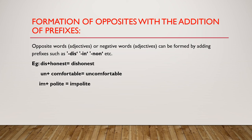Formation of opposites with the addition of prefixes: opposite words or negative words can be formed by adding prefixes such as dis-, in-, non-, etc. For example, the prefix 'dis-' added to the adjective 'honest' makes its opposite 'dishonest'. The prefix 'un-' joined with 'comfortable' makes 'uncomfortable'. The prefix 'im-' combined with 'polite' makes 'impolite'.